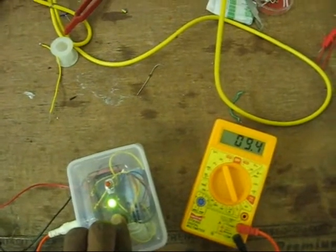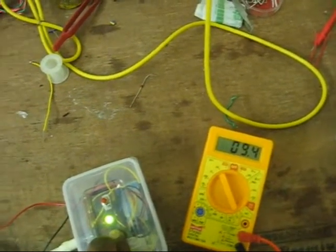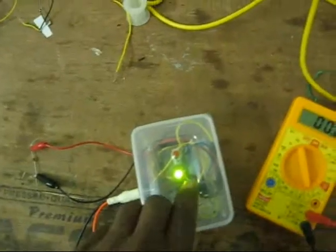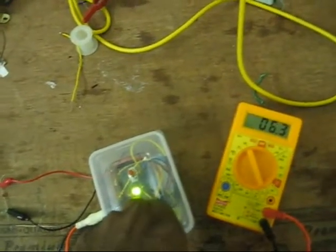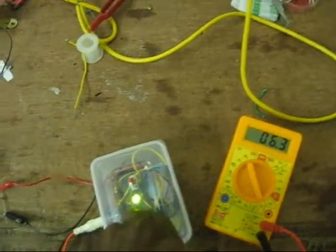And the diode is connected. Its value is about 9.4 volts. And one more. Its value is about 6.3 volts.